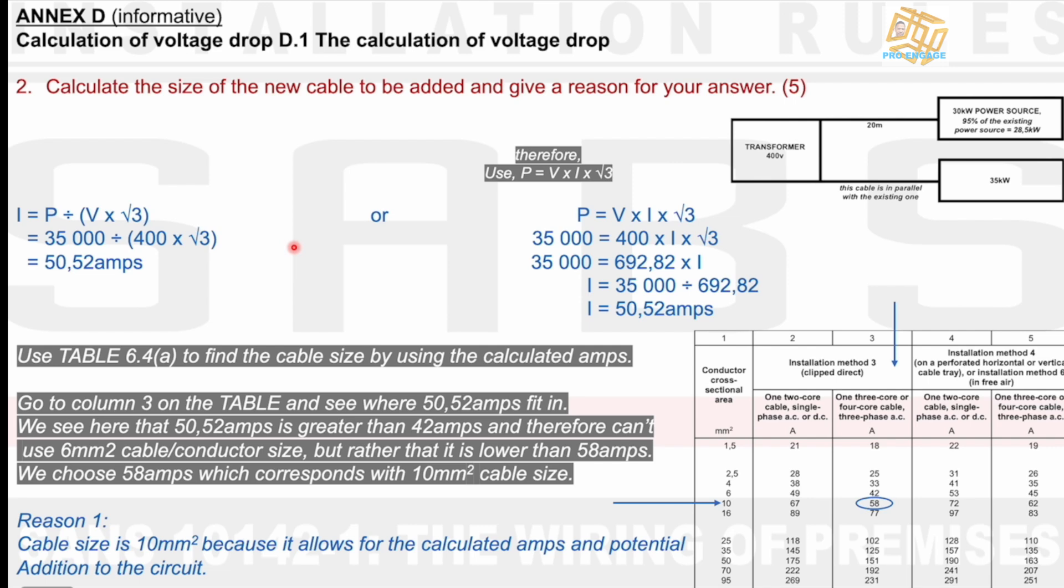I manipulate that formula and I get I equals 35,000 divided by 400 times square root 3. I get 50.52 amps and I use also another format of calculating except for, in this case, in this formula, I don't multiply out or make the subject of the formula. And I then inject the values and I times it out and I get this at the end of the day, I equals 35,000 divided by 692.82. And I get 50.52 amps.